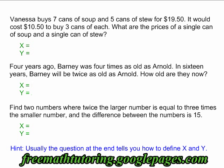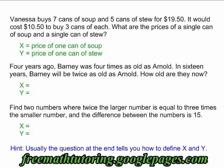As you can see down here in blue, the hint is that the question at the end usually tells you how to define x and y. In this case, the question is asking what is the price of a single can of soup and what is the price of a single can of stew. That is exactly how you want to define your x and your y. Therefore, x is equal to the price of one can of soup and y is equal to the price of one can of stew.